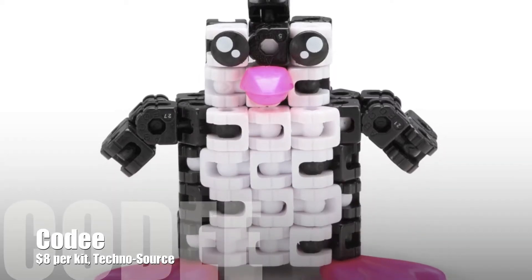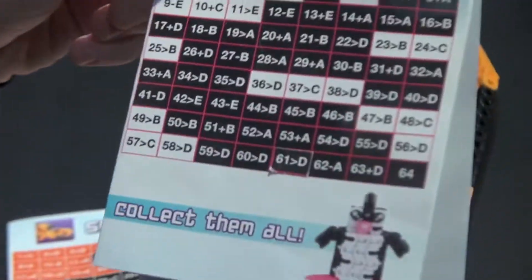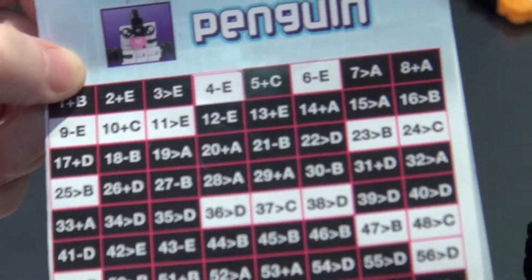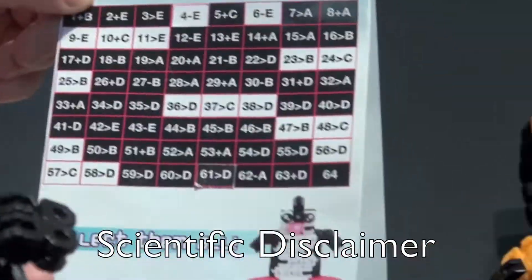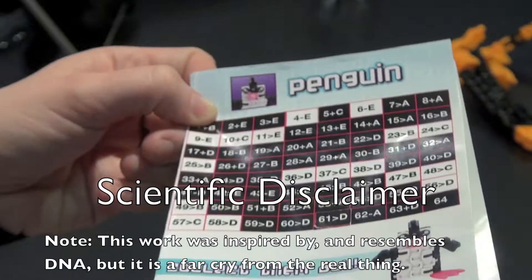So this is the penguin that was created from this code, 64 pieces. So these instructions right here are that. What you're saying is this is like DNA. Exactly, it's genetics. You're learning genetics right now.